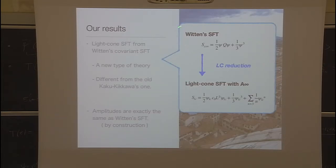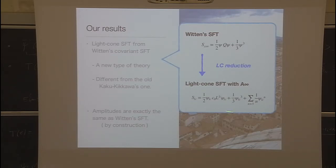This is our strategy and result. If you start from Witten theory, you will obtain a consistent light cone string field theory, but it has infinite numbers of interactions with some infinite structure. So it gives a new type of light cone theory, different from Kaku-Kikawa's one. By construction, the amplitude is exactly the same as the original one.